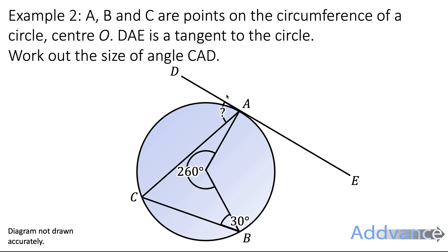So CAD is this angle here between C and D at A. And we also know that because this is a tangent it will be right angles to the radius so this will be a right angle here. Because there's 260 degrees in the centre here, the other angle to make it a full 360 degree revolution will be 100. So we can fill in this angle here as 100.